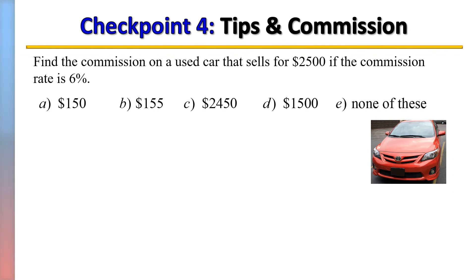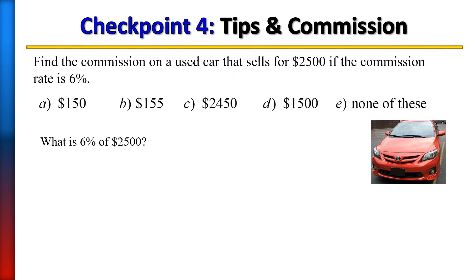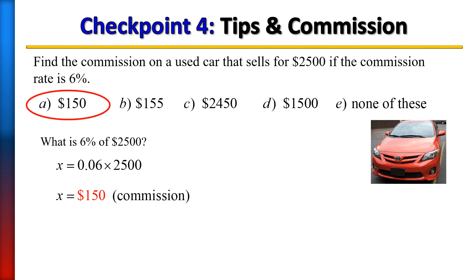Find the commission on a used car that sells for $2,500 if the commission rate is 6%. Take some time to calculate: what is 6% of $2,500? Turn 6% into 0.06 and multiply by 2,500. The commission is $150, which is choice A.